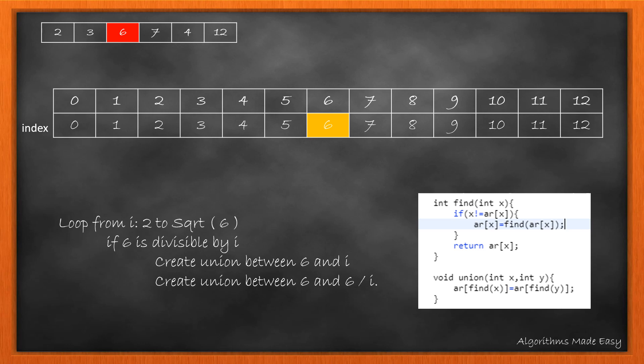For more clarity, let's add index to all the values. We will be updating the value at index 6. So we will start looping from 2 to square root of 6. As 2 is a factor, we need to create the union between 6 and 2. Inside union, we will call the find method for both x and y and update the value at parent of x with the value at parent of y. So in this case, the value at index 6 becomes 2. This creates a relationship between the two.